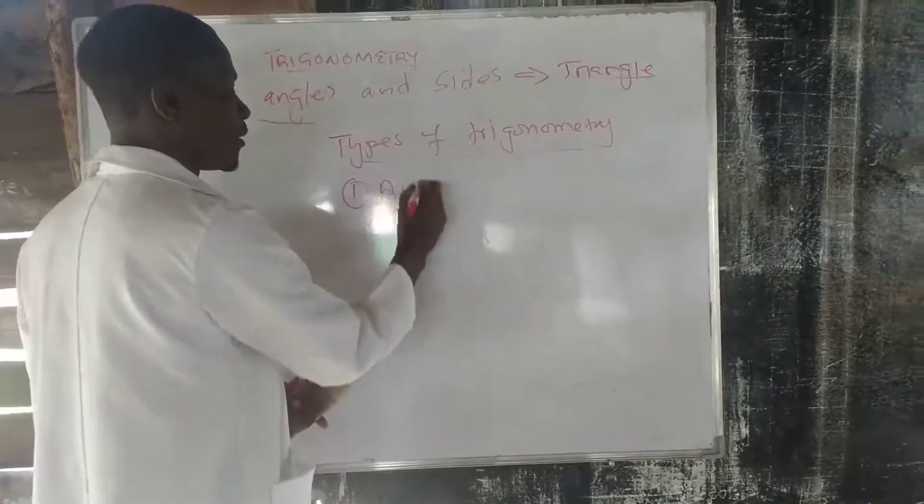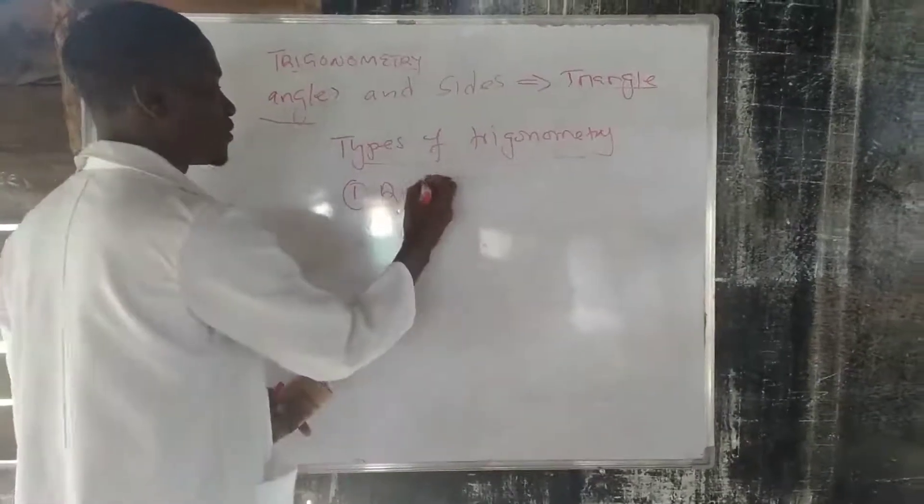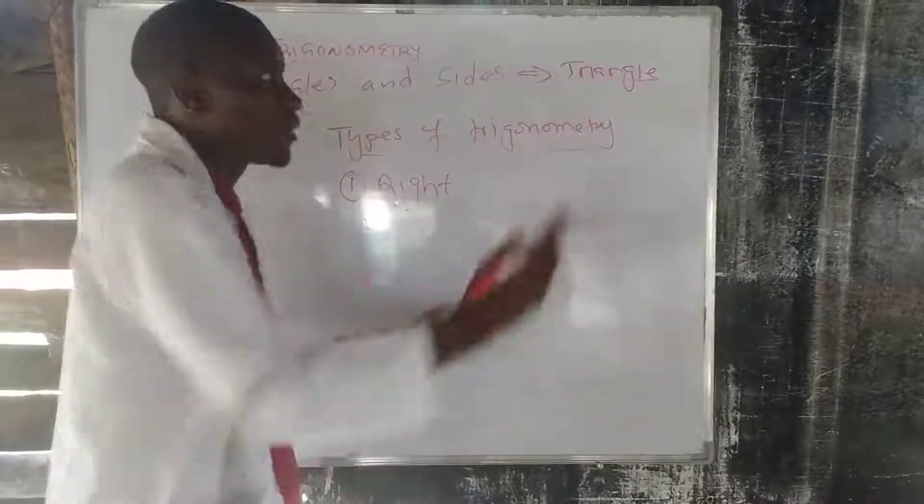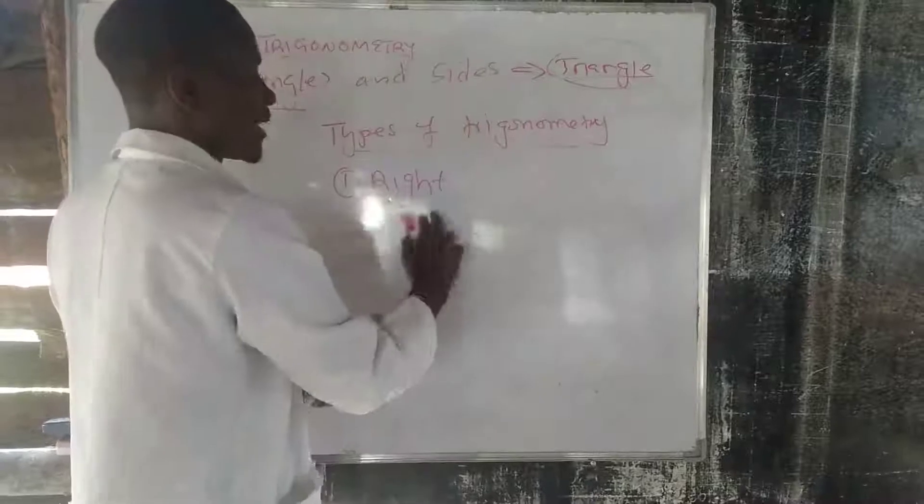So, the first one is trigonometry can be solved using this concept. We assume that the triangle that we are dealing with is a right-angled triangle.